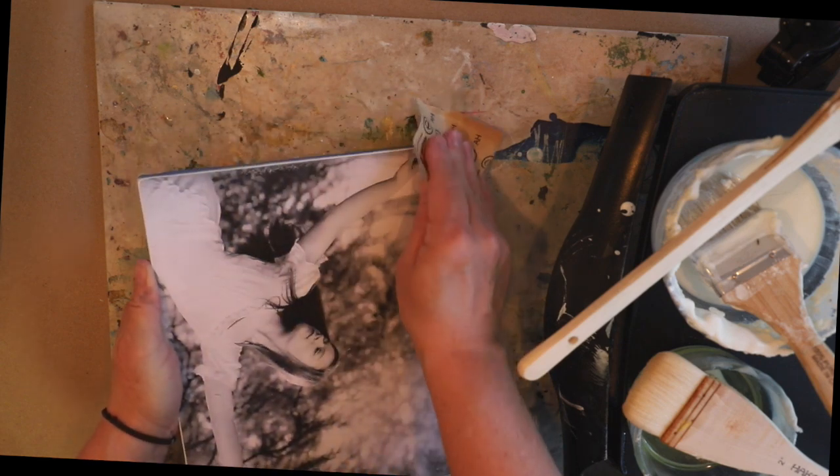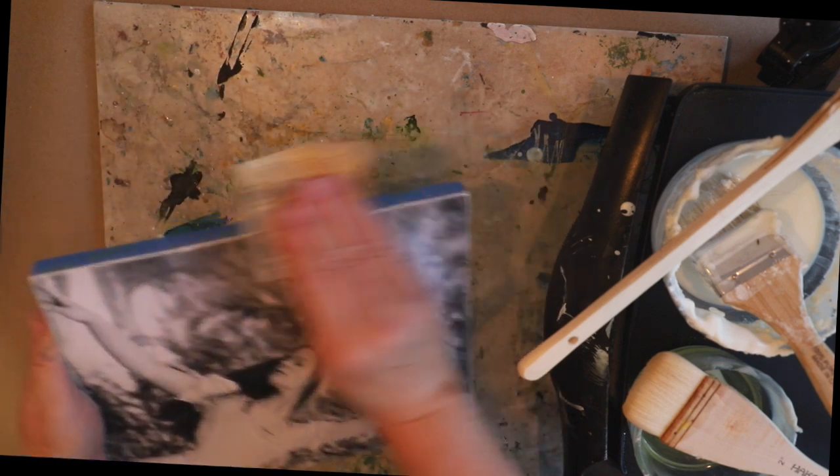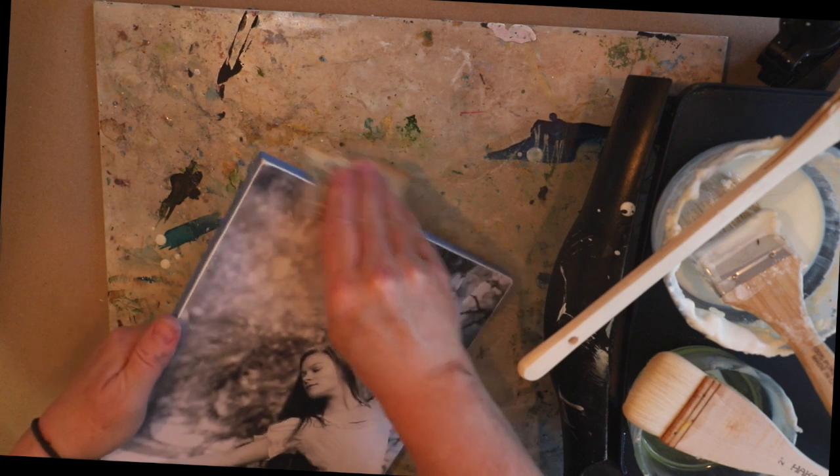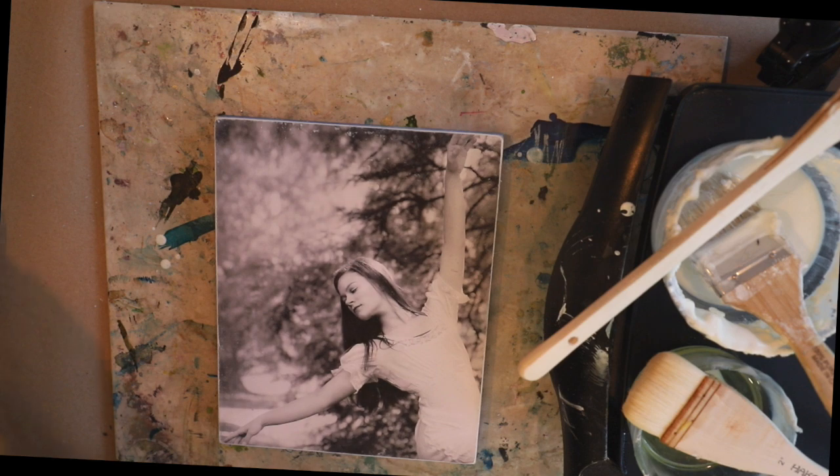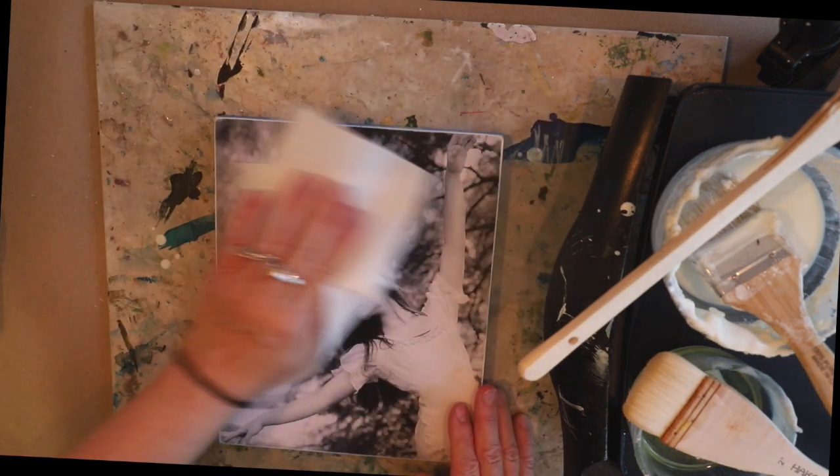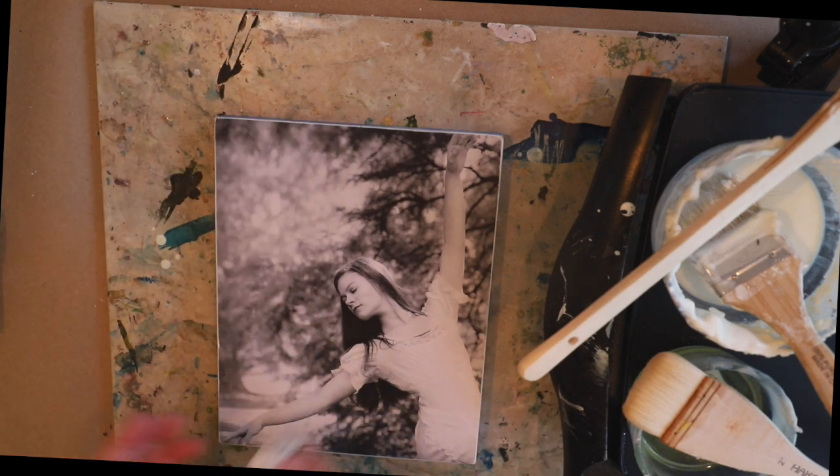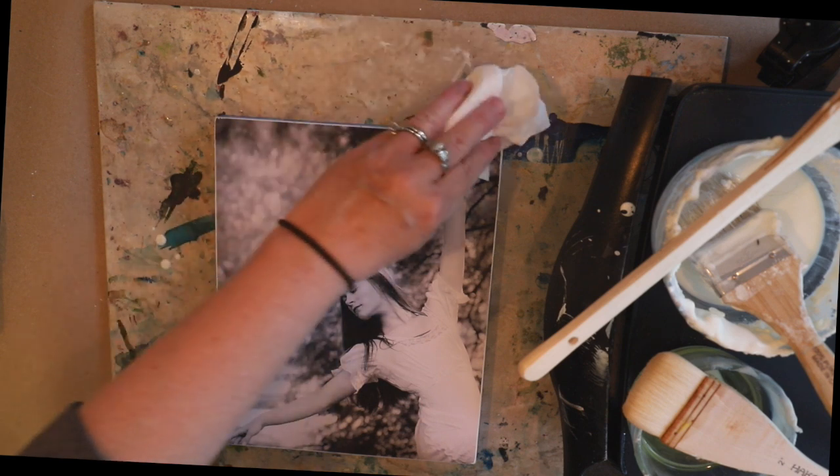Sometimes I do it on purpose if I want a more vintagey look—you can very lightly go in with a piece of sandpaper, especially in those dark black areas, and get a little scuffing for a vintagey look. But if that's not what you want, be careful that you're just going around the edges. With that paper towel wiping it off, I'm being very light-handed so I don't scratch my photo.